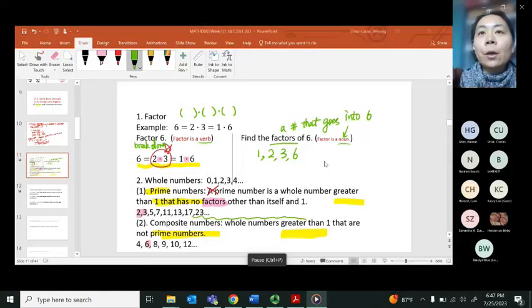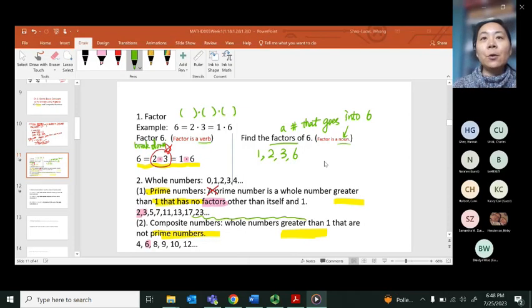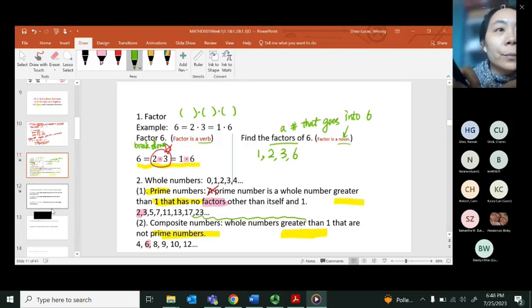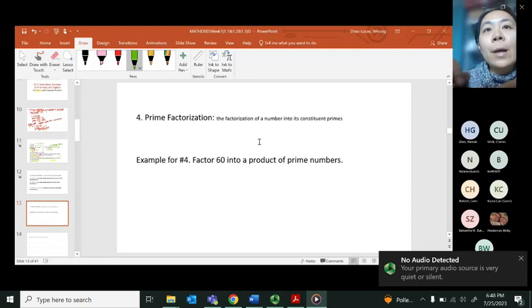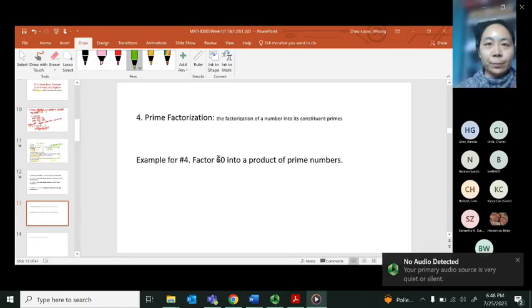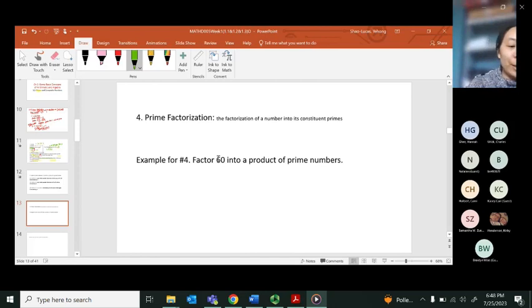But they want you to determine the factorization. And here, we do want you to do the prime factorization. So you want to make sure your final answer, all the numbers are prime numbers. And I will give you an example before. Let's look. So let's see. If I want to factor 60 into a product of prime numbers, how do I break down 60?